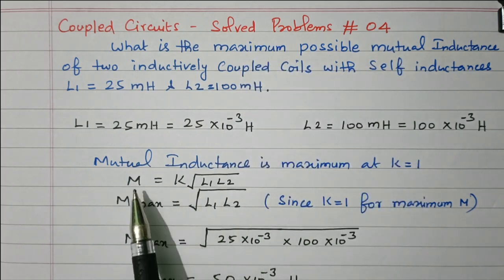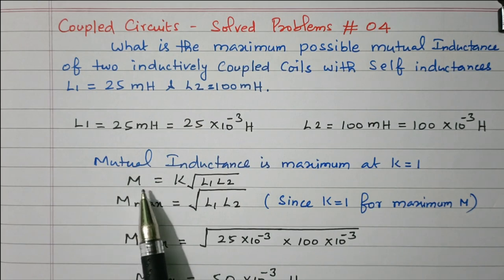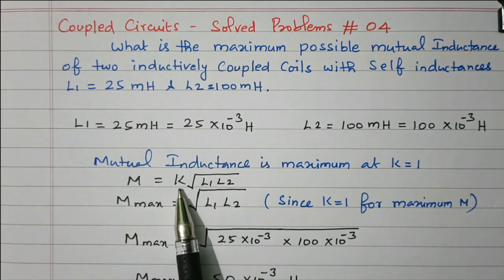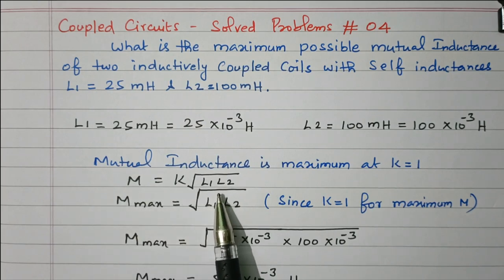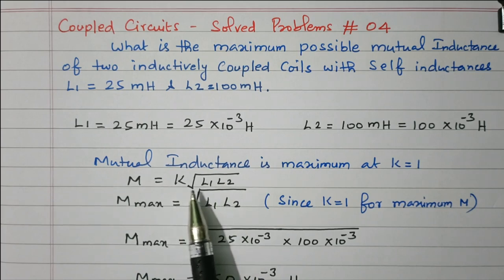What is the formula for mutual inductance? M equal to K into square root of L1 into L2. This K is nothing but the coupling coefficient.